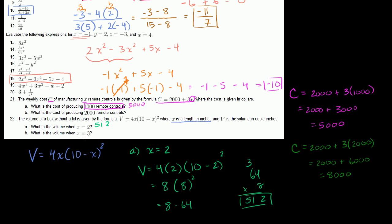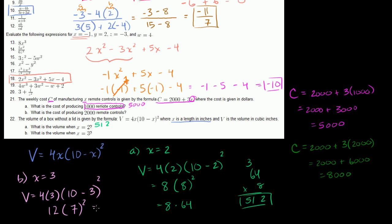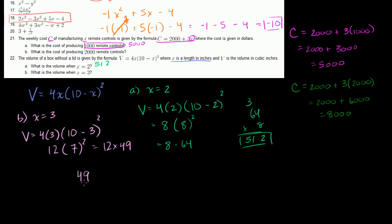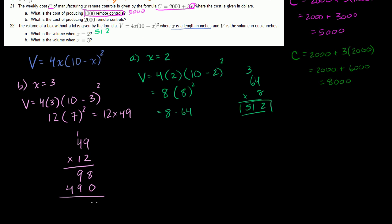Part B: when x equals 3, the volume equals 4 times 3 times (10 minus 3) squared, which is 12 times 7 squared, or 12 times 49. Multiplying: 49 times 12 gives us 588 cubic inches.